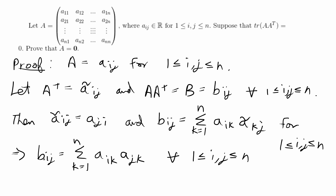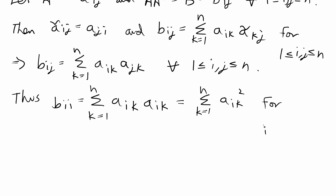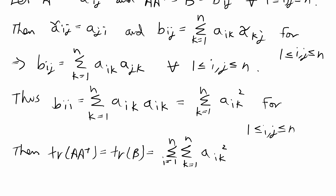Using this definition of every entry B_ij, we can find an equation for the diagonal entries B_ii, which gives the main diagonal of A times A transpose. B_ii equals the sum from k=1 to n of A_ik times A_ik, which equals the sum from k=1 to n of A_ik squared. The trace of A times A transpose equals the trace of B, which is the sum from i=1 to n of B_ii, equaling the double sum of A_ik squared.